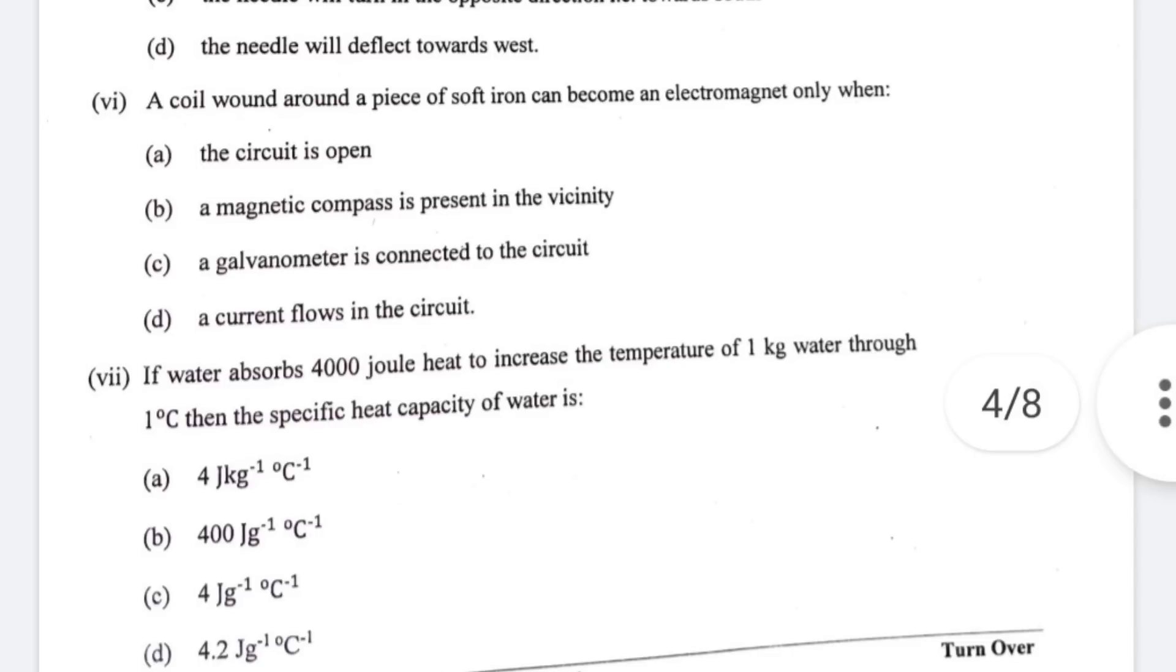Question number six: a coil wound around a piece of soft iron can become an electromagnet only when. For the sixth question the correct option is D, a current flows in the circuit. Only in that condition it can become an electromagnet.